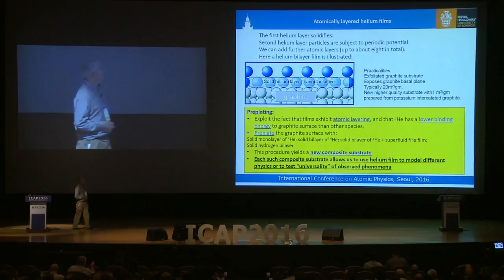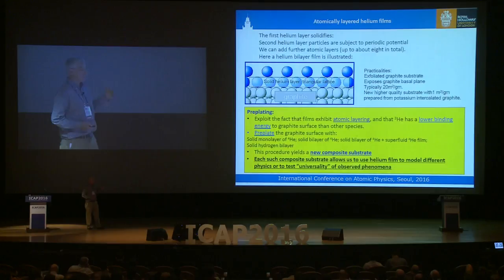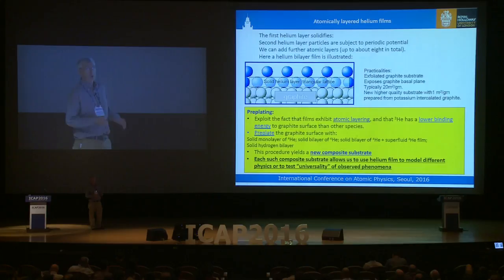Here's the graphite surface with two layers on it. The first helium layer solidifies, forming a close-packed solid on a triangular lattice. The second layer atoms are subject to the periodic potential of the first layer atoms, and we can add further layers up to about 18 total. The surface of graphite is atomically flat, but we need a relatively large surface area for thermodynamic measurements, so we exfoliate the graphite substrate — essentially exploding a single crystal of graphite — which exposes the basal planes, giving a surface area of about 20 square meters per gram.